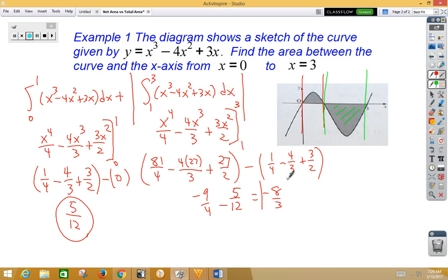We're going to take the absolute value of that, so that would give us 8 thirds. Now we need to take our two fractions and combine them. So we get 5 twelfths plus 8 thirds, which gives us 37 over 12. And that would be our total area.